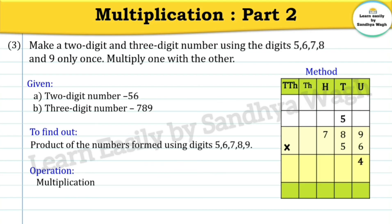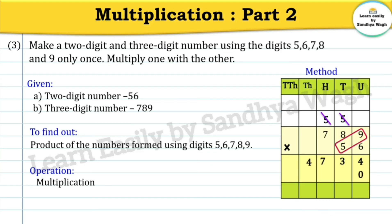Six nines are 54, so we will write 4 in the units place and 5 will go in the tens place as a carry over. Six eights are 48, forty-eight plus five is 53, so we will write 3 in the tens place and 5 will go in the hundreds place as a carry over. Six sevens are 42, plus five is 47. Now let's write zero and five nines are 45, so write 5 in the tens place and 4 will go in the hundreds place as a carry over.